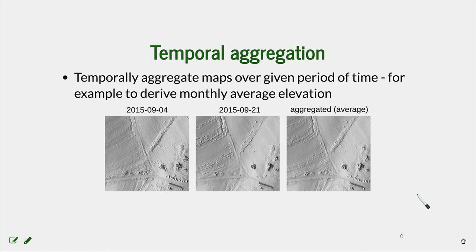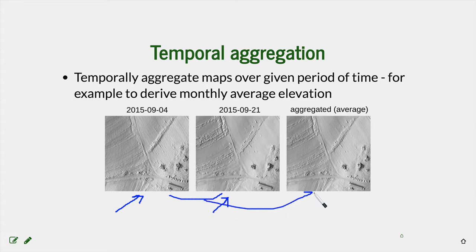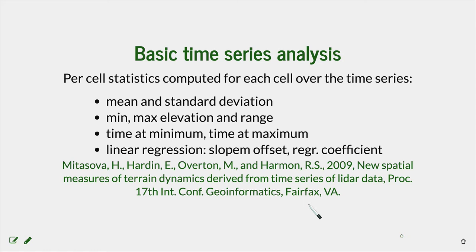It often happens that we repeat a flight within one day, two days, or several times during one month, but we are only interested in monthly changes. In that case we can apply temporal aggregation — for example, defining a function that averages all surveys within one month. Here, two flights during September are aggregated into a monthly average map. Looking at the two images helps you think about whether this aggregation approach is appropriate for a particular case. The next section of the lecture will cover basic time series analysis.